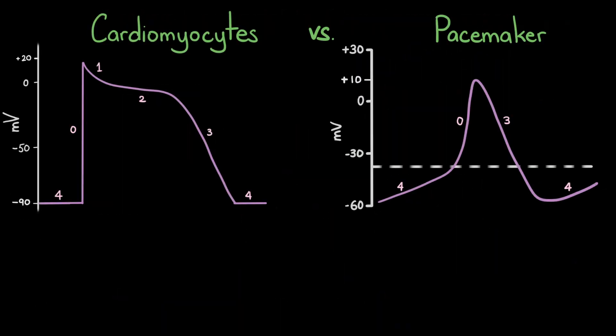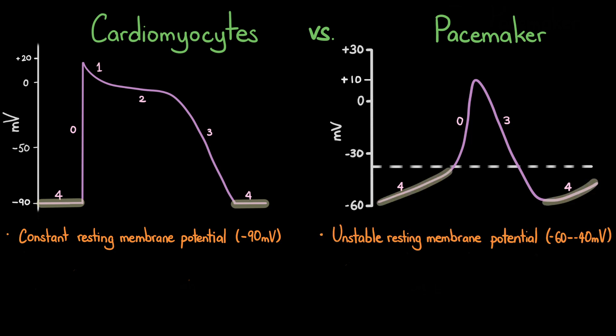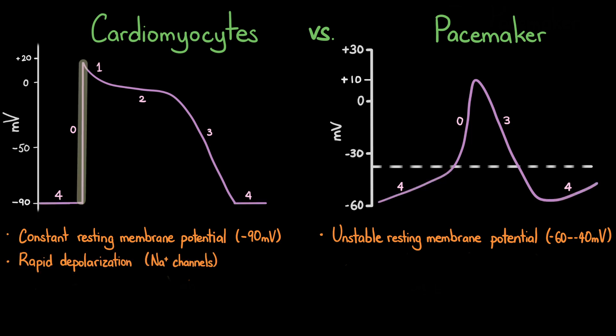The shape of the action potential waveform in contractile cardiomyocytes differs from pacemaker cells in many ways. First, the resting membrane potential in cardiomyocytes stays constant at around minus 90 millivolts until an outside stimulus is received. In pacemaker cells, the resting membrane potential is relatively unstable and typically ranges between minus 60 and minus 40 millivolts, due to the presence of funny or If channels that allow an influx of sodium ions. Second, depolarization in contractile cardiomyocytes occurs rapidly due to the opening of voltage-gated fast sodium channels, resulting in a rapid influx of sodium ions and a steep rise in the action potential.